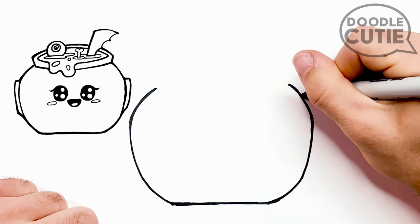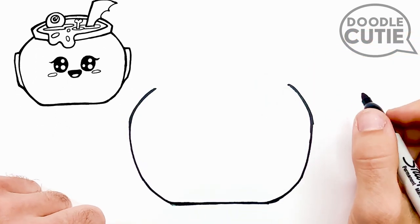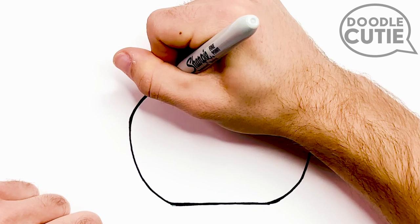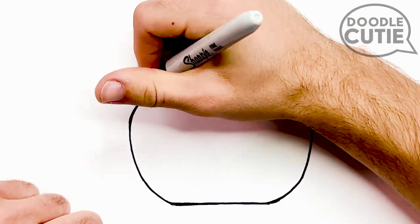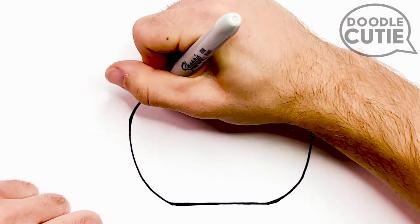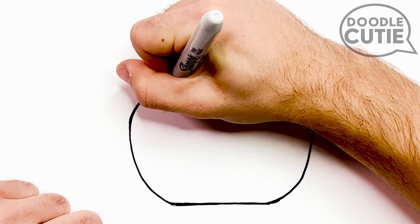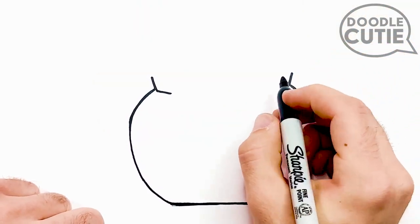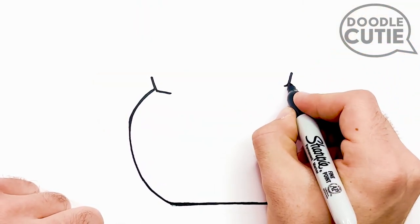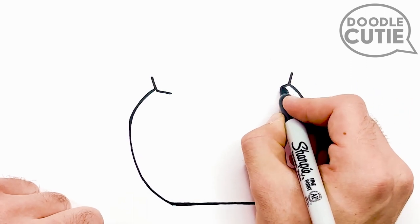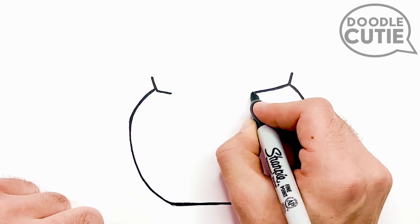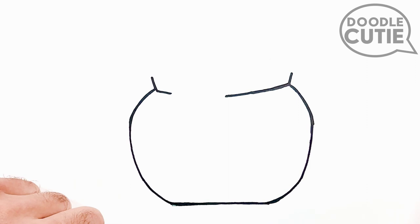Then we'll move on to the top of our cauldron, starting with the left side. Draw a little line like that. Then we'll go over to our right side and do another L shape, but mirrored. And the bottom will be a bit longer than the other side, like this. Then we'll draw the top of this shape.